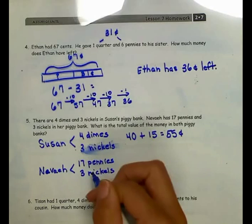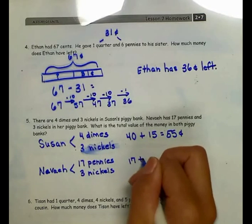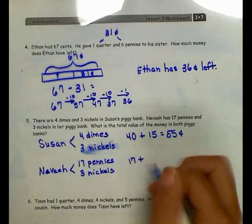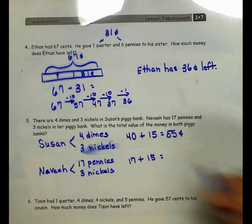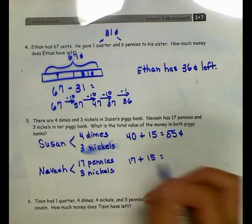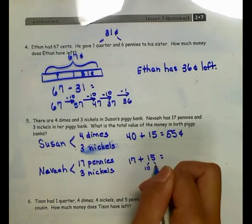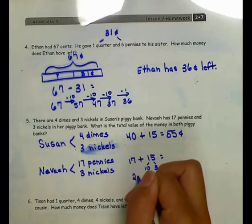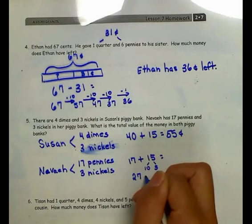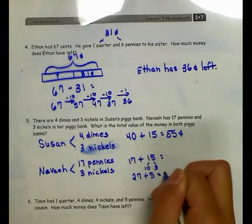Navia has 17 pennies, which is 17 cents, plus 3 nickels, which is 15 cents. I'll decompose 15: 17 plus 10 more is 27, plus 5 more gives me 32 cents.